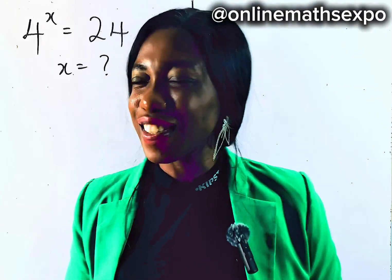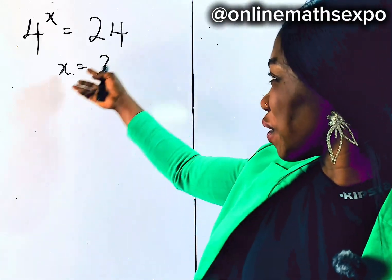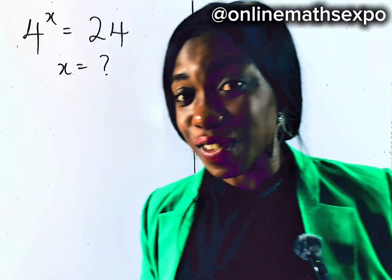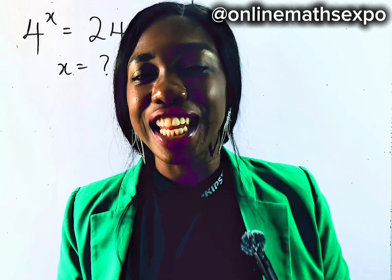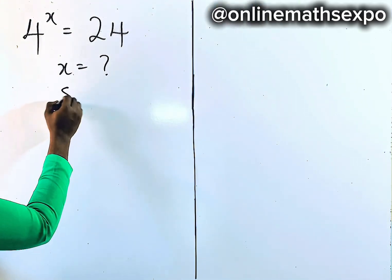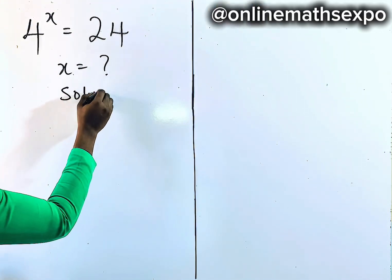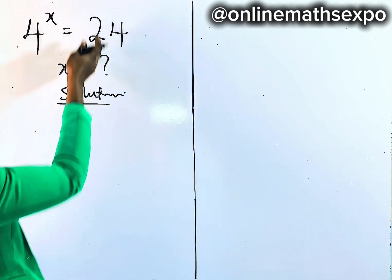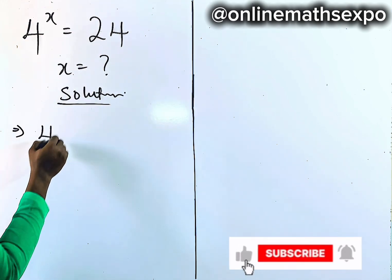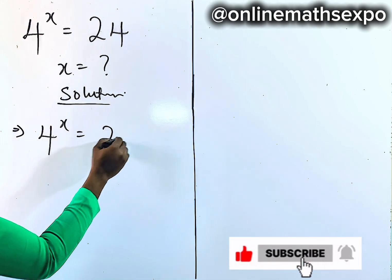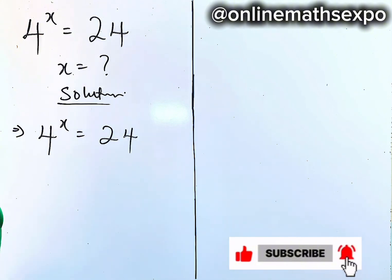Welcome, and let's solve this beautiful equation together. We're going to begin with our solution. Let's repeat what we have: 4 to the power of x is equal to 24.